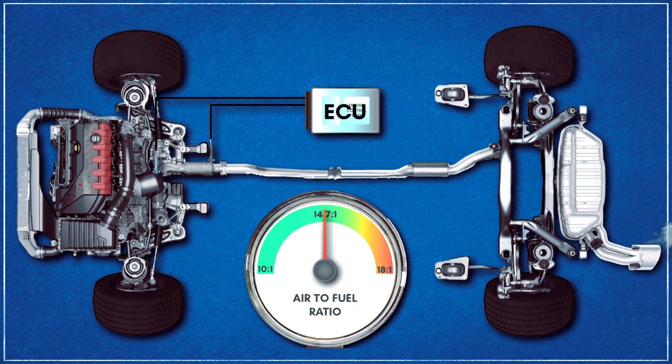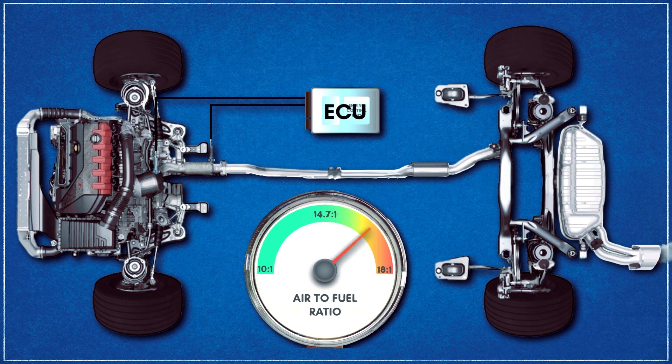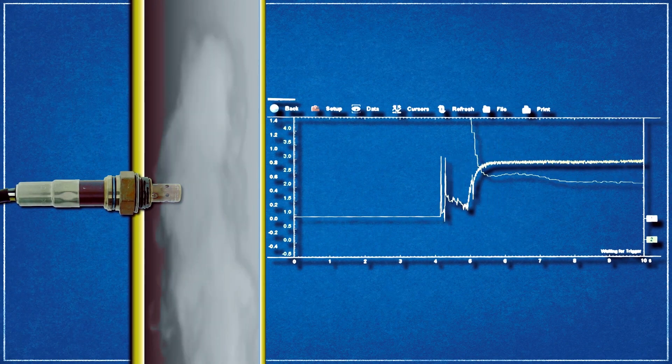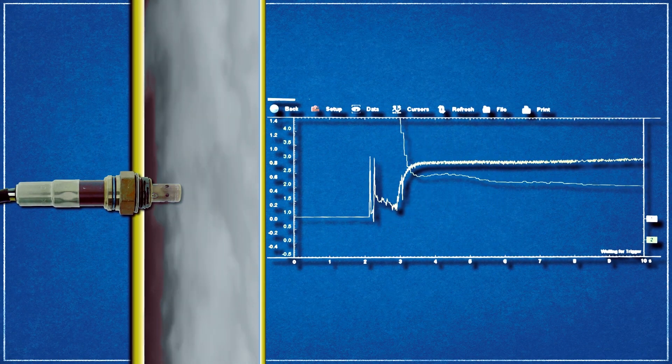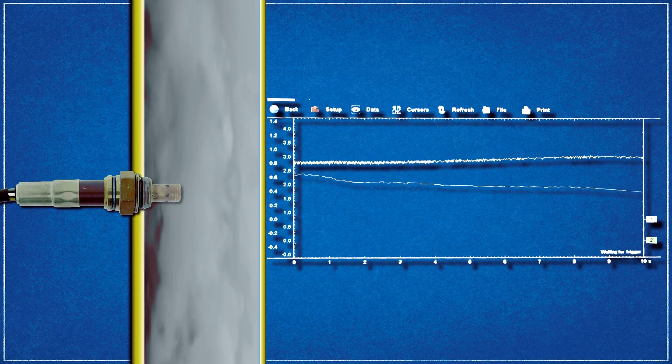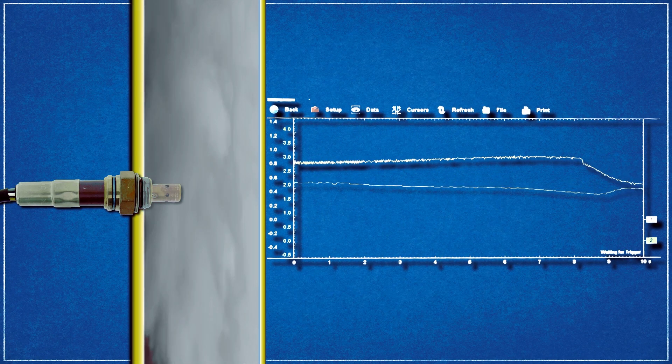Rather, when data from the oxygen sensors are used in conjunction with information from other sensors, it can be applied to indirectly determine the optimal air-fuel ratio. This closed-loop method of control allows fuel injection to refine injector output according to the real-time sensor data, rather than operating with a predetermined or open-loop fuel map.